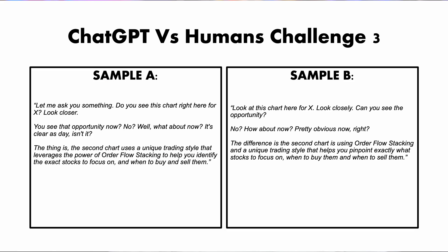Here's the third set of examples. Sample A: Let me ask you something. Do you see this chart right here for X? Look closer. You see the opportunity now? No? Well, what about now? It's clear as day, isn't it? The thing is, the second chart uses a unique trading style that leverages the power of order flow stacking to help you identify the exact stocks to focus on, when to buy and when to sell them.